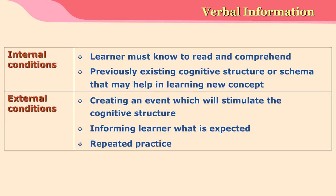The internal conditions required for verbal information are: learners must know how to read and comprehend, because problems in connecting what is read may prevent correct performance. Previously existing cognitive structures or schema must be brought into working memory. External conditions created by the teacher include stimulating the cognitive structure, informing the learner what is expected, repeated practice, and giving certain opportunities to exhibit the performance of verbal information.